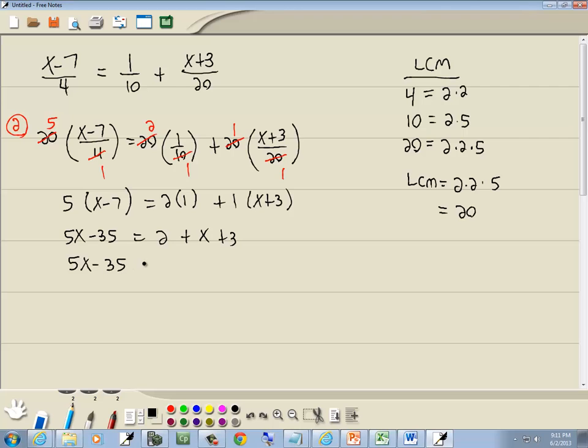Now remember our note at the top. We said in any step, combine together like terms, combine together numbers. 2 plus 3 gives us 5.